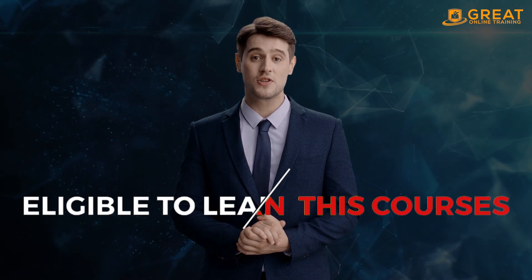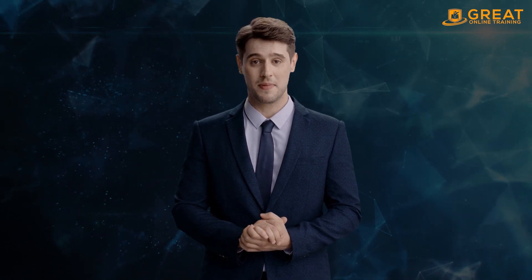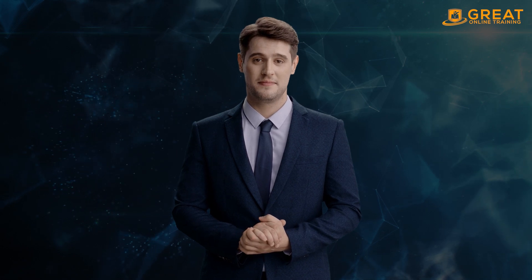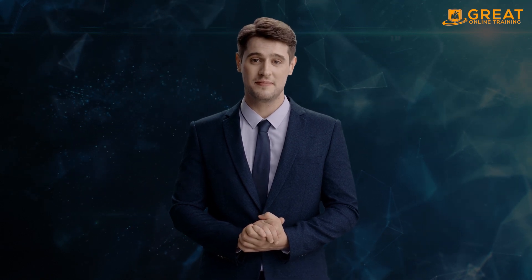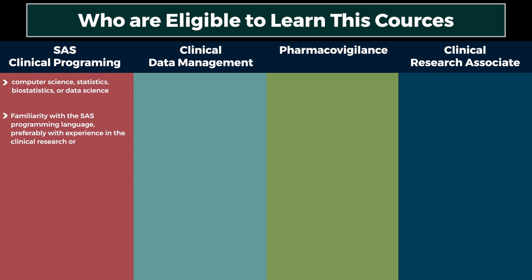Who is eligible to learn these courses? Each of these roles in clinical research has different eligibility requirements based on the knowledge and skills needed for the job. For SAS Clinical Programmer: a Bachelor's or Master's degree in a relevant field such as Computer Science, Statistics, Biostatistics, or Data Science; familiarity with the SAS programming language, preferably with experience in the clinical research or pharmaceutical industry; knowledge of clinical trial standards such as CDISC; and strong problem-solving and analytical skills.